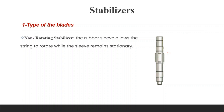Non-rotating stabilizer: the rubber sleeve allows the drill string to rotate while the sleeves remain stationary. All of the BHA is rotating, but only the sleeves remain stationary, so the wear on the blades is much less than in other stabilizers because they are not affected by formation rotation. Therefore, they may be used in very hard and abrasive formations. These stabilizers are used to centralize the drill collars.